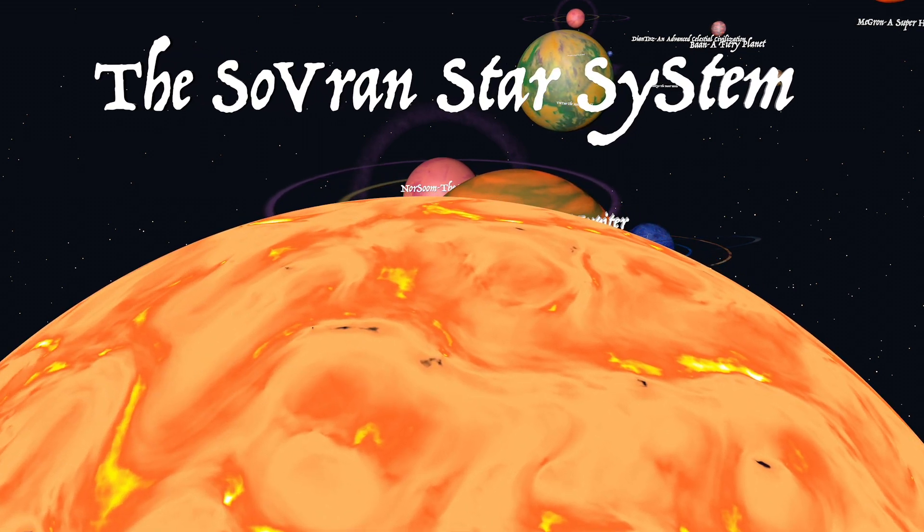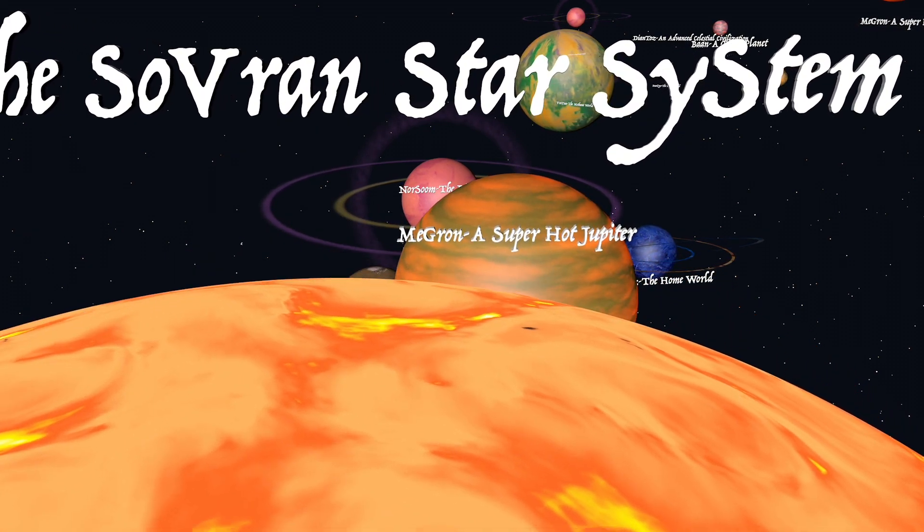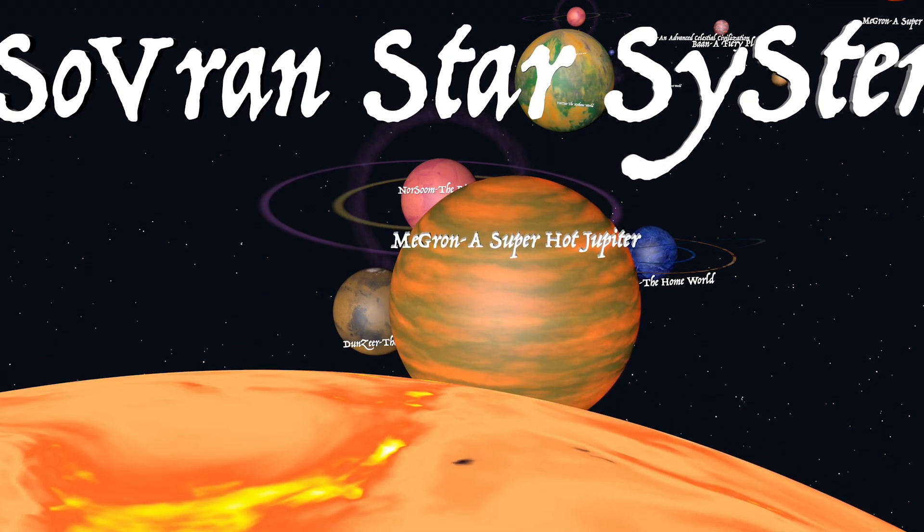Sovran is a class G yellow dwarf Sun. It is 1.1 times the mass and 1.5 times the luminosity of the Earth and Sun.